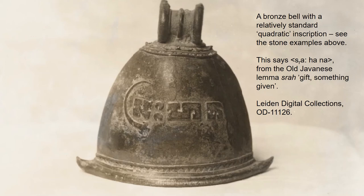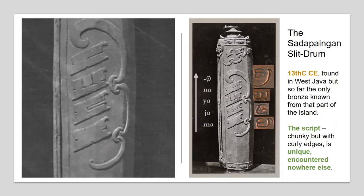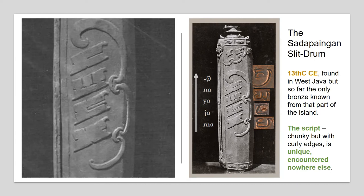This is probably the most normal of the bronze scripts. When you get onto something like the Salapainan slit drum — slit drums are a very common instrument in Southeast Asia, normally made of a hollowed-out log — the script here is completely unique to this drum and not found anywhere else. It consists of odd little rectangles with teased-out edges and little indentations. It can only really be read because around the top there is a date in Chandra Sangkala, which uses words to represent numbers. This character says ma, and it looks like no other ma that we see. This is from about 1286.